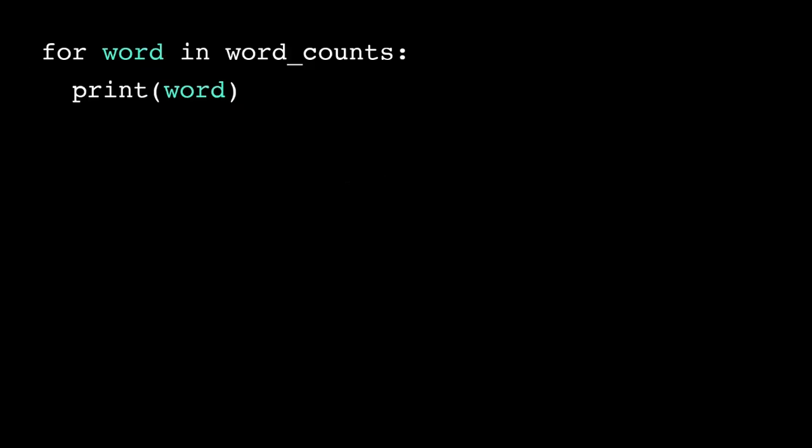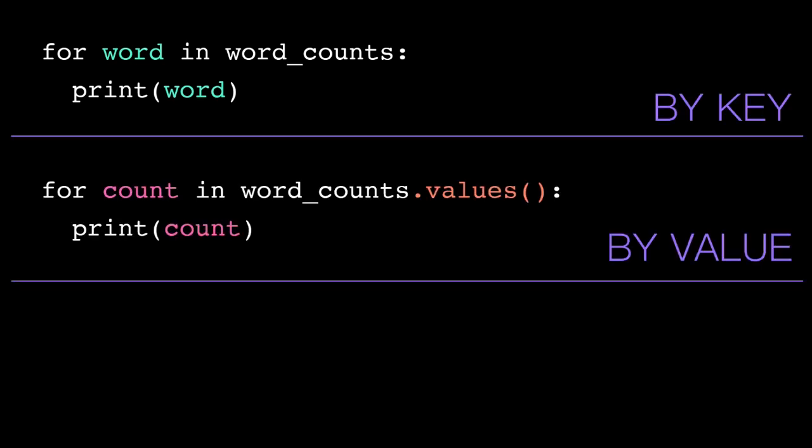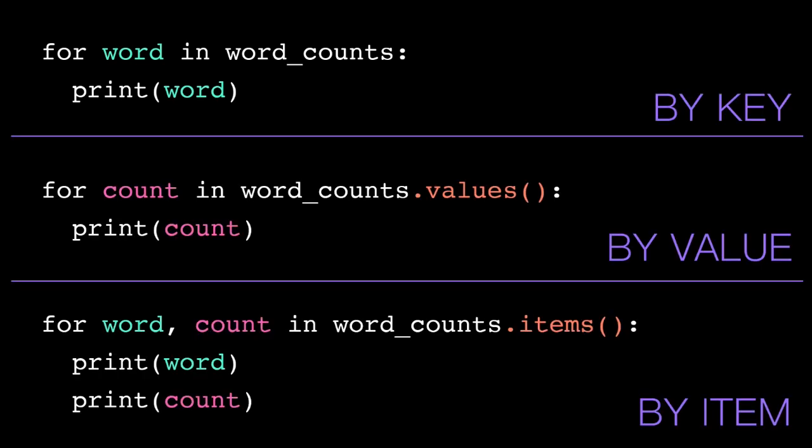Implementation aside, the big takeaway is that we can iterate over a dictionary, by key, by value, and by item. The choice is just up to what data you need.